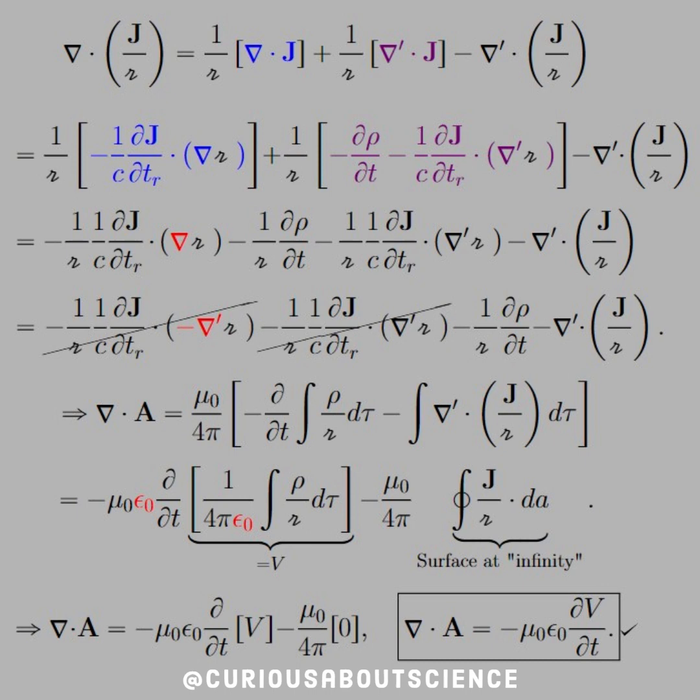Now once we do that, now we just kind of simplify and tidy up all the vector algebra that we possibly can, which will get messy and messy and messy. But you see that we know that that DEL operator in the red acting on script R is also equivalent to putting a negative sign on the prime operator. So we see if we substitute that in, we can cancel out the 1 over script R, 1 over C, evaluated in the retarded time derivative, and they cancel out quite nice. How awesome is that? And then we're left with that negative 1 over script R d rho dt minus del prime dotted with J over script R.